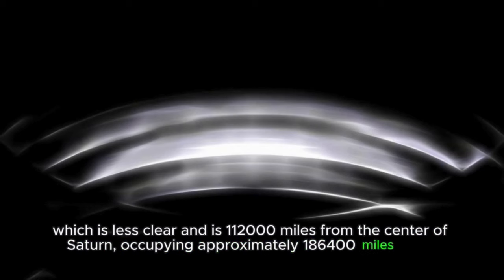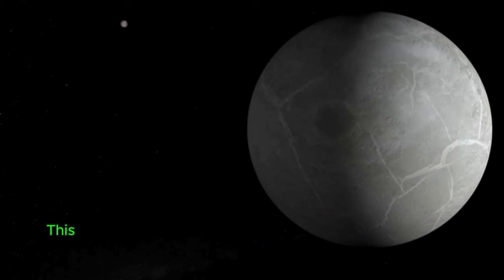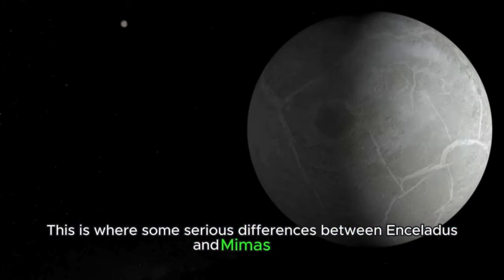Which is less clear, and is 112,000 miles from the center of Saturn, occupying approximately 186,400 miles wide. So how could such a small planet create such a huge ring? This is where some serious differences between Enceladus and Mimas begin.